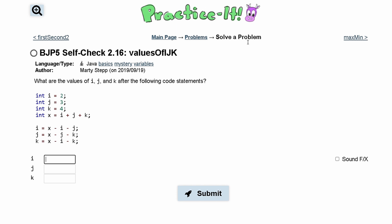In Practice-It self-check 2.16 values of I, J, K, we are asked what are the values of I, J, and K after the following code statements.